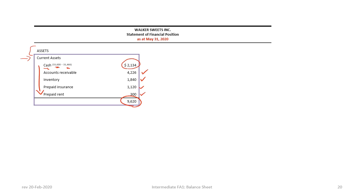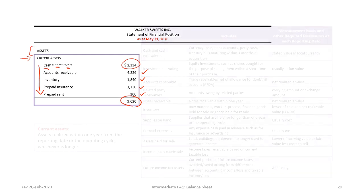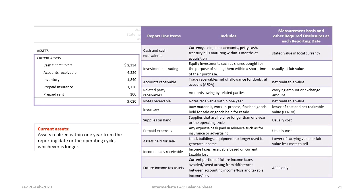Current assets are defined as those realized within one year from the reporting date or operating cycle, whichever is longer — though it is very rare to encounter a company with an operating cycle exceeding one year. Items that comprise current assets can include cash and cash equivalents, short-term trading investments, accounts receivable, notes receivable, supplies on hand, and prepaids.